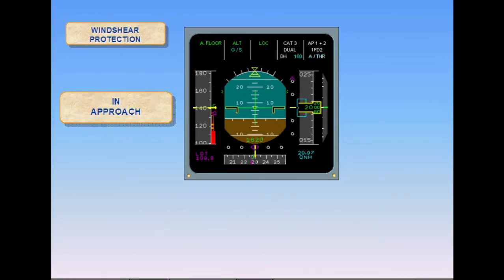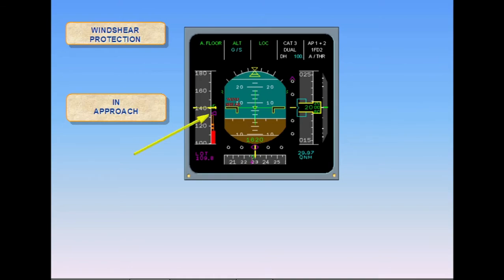Wind shear protection is also provided in the approach mode when managed speed is engaged. The target speed, V approach, is automatically adjusted with wind variations, ensuring that the ground speed does not drop below a minimum value, referred to as mini ground speed. This protection is absent if the system is in selected speed.